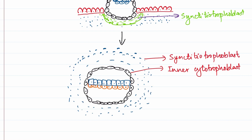The cytotrophoblast consists of cells having a single nucleus and well-defined plasma membranes, and they are present near the embryoblast. The syncytiotrophoblast, on the other hand, consists of multinucleated cells having indistinct plasma membranes. So there are two features that differ them: the nucleus — syncytio is multinucleated, cytotrophoblast is uninucleated — and their plasma membranes: syncytiotrophoblast does not have a distinct plasma membrane, whereas cytotrophoblast does.